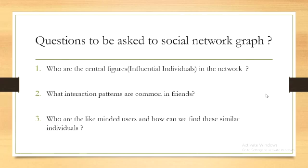Second question is: what interaction patterns are common in friends? This is very important because you need to understand the likes of users whom you are targeting for marketing. There is no use in marketing solar energy products in a region where there is no sun for six months. For example, suppose you want to promote traditional clothes but the group you are targeting is more interested in sports — there is no use targeting them for traditional clothes.